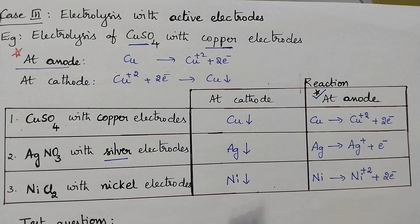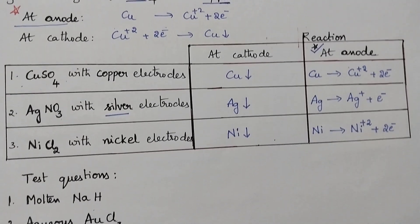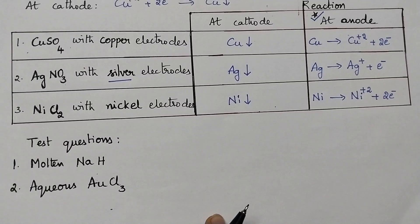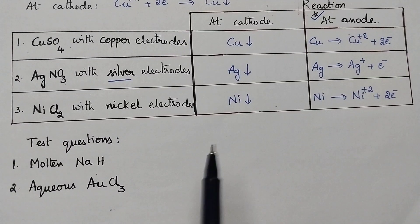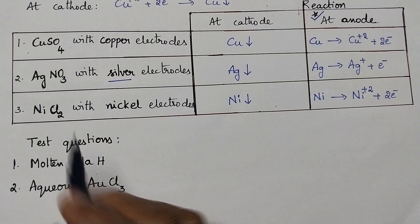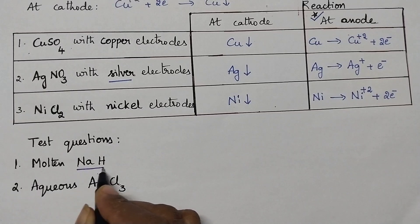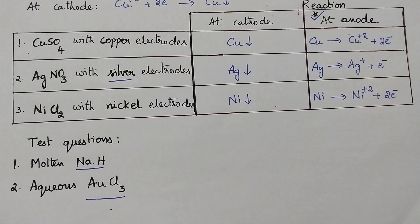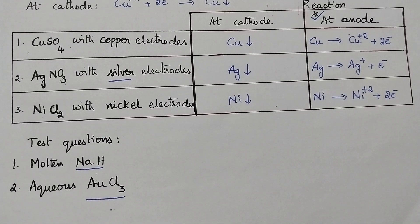I am going to conclude this video by giving two test questions. You are supposed to identify what are the products formed at the cathode and at the anode during the electrolysis of molten NaH solution and aqueous gold chloride solution. If you like the video, don't forget to like, share, and subscribe. Thanks for watching. Have a nice day, see you next time.